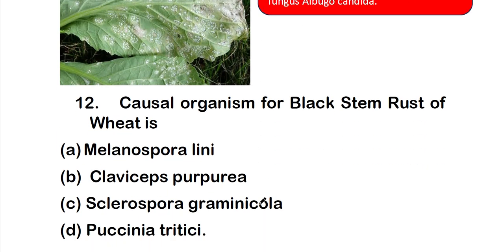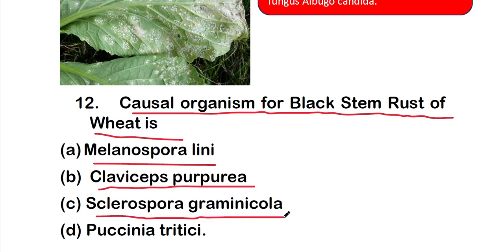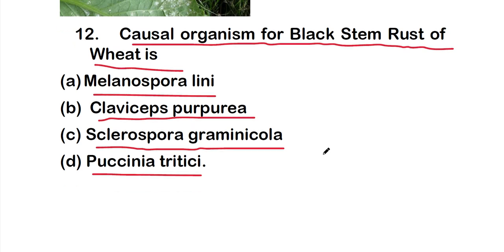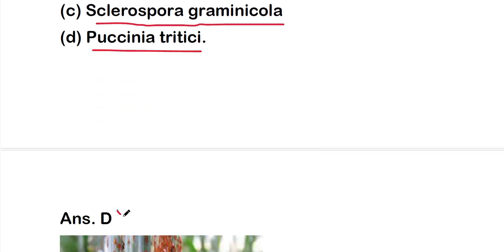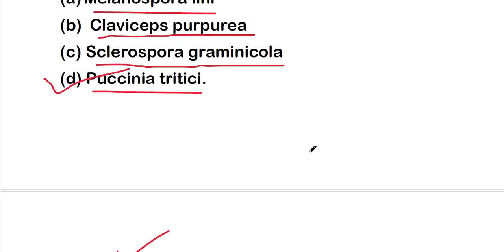Question 12: the causal organism for black stem rust of wheat is — option A: Melanospora lini, option B: Claviceps purpurea, option C: Sclerospora graminicola, or option D: Puccinia graminis tritici. The right answer is option D, Puccinia graminis tritici. This is the black stem rust of wheat.